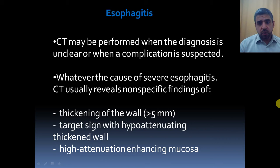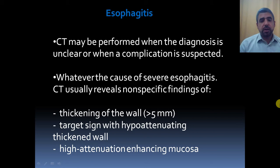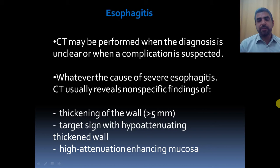Usually CT is done when the diagnosis is unclear or when a complication is suspected. The CT findings include thickening of the esophageal wall more than 5 mm, a target sign with hypoattenuating thickened wall — that is to say an edematous wall — and high attenuation enhancing mucosa, because the mucosa is inflamed and will show post-contrast enhancement, while the wall is edematous and appears as a hypoattenuating thick wall.